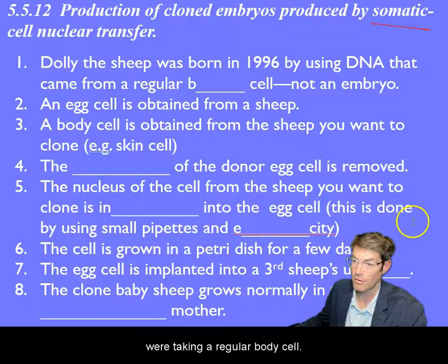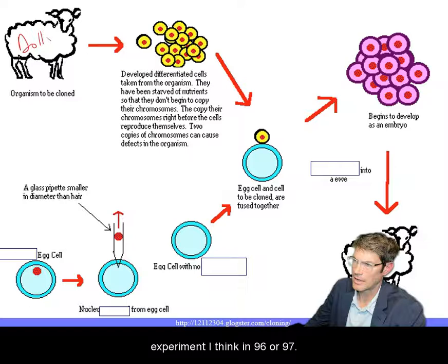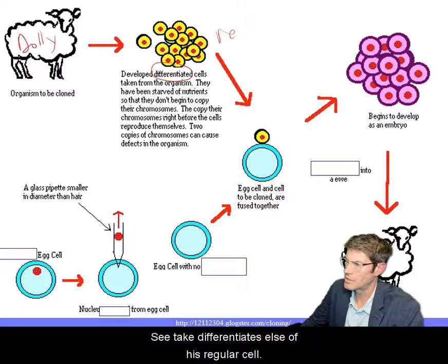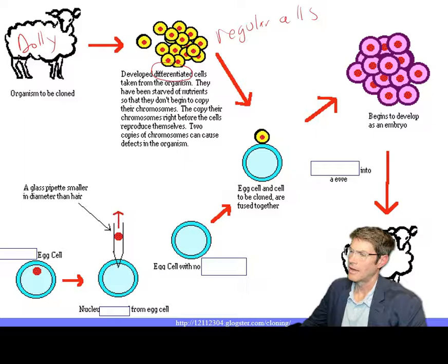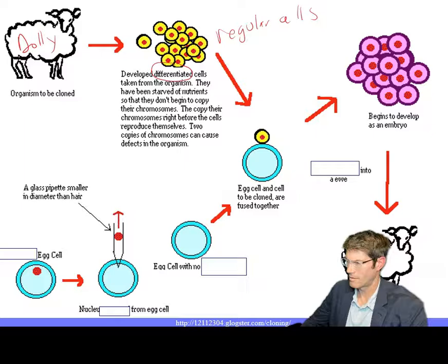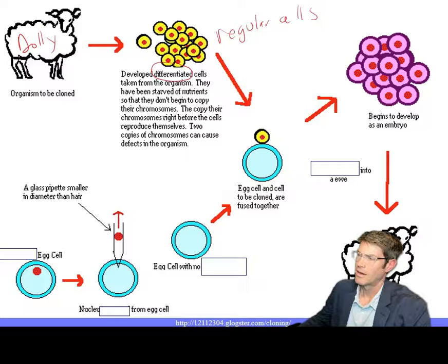This next part is the most famous — talking about somatic cells. This would be taking a regular body cell and making a clone. This is the famous Dolly experiment, I think in 1996 or 1997. You take differentiated cells — just regular cells.